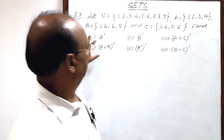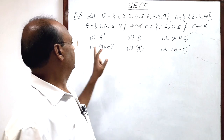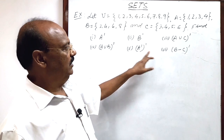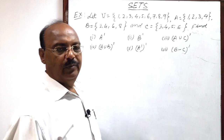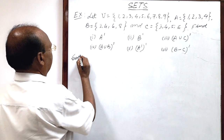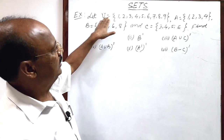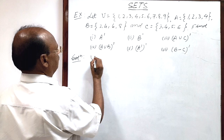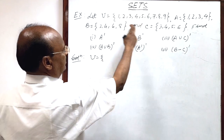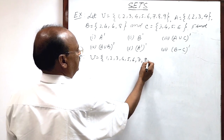And set C is having elements 3, 4, 5, 6. Then we have to find — there are 6 parts of this question: first A complement, second B complement, third A union C whole complement, fourth A union B whole complement, fifth A double complement, and sixth B minus C whole complement. First of all, you have to see the universal set — it plays a very important role in finding out the complement of a set. The universal set has 9 elements: 1, 2, 3, 4, 5, 6, 7, 8, 9.